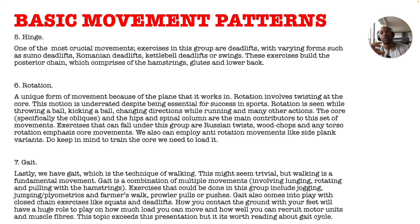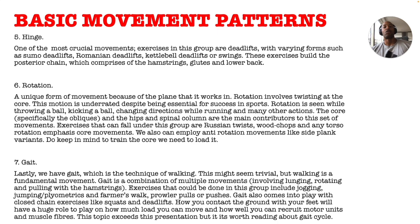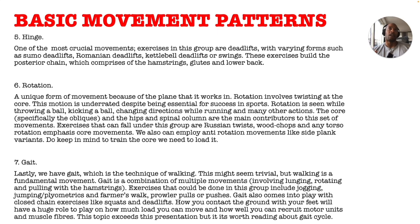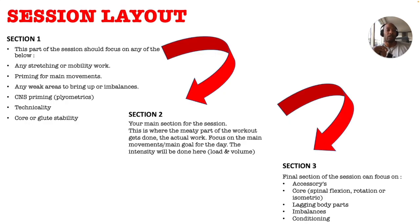Number seven: Gait — the technique of walking. This might seem trivial, but walking is a fundamental movement. Gait is the combination of multiple movements involving lunging, rotating, and pulling with the hamstrings. Exercises in this group include jogging, jumping, plyometrics, farmer's walks, prowler pulls, and prowler pushes. Gait also comes into play with closed-chain exercises like squats and deadlifts — how you contact the ground with your feet plays a huge role in how much load you can move and how well you can recruit motor units and muscle fibers. When assessing clients, the first place I look is their feet, because the feet tells you everything, and everything that happens there usually travels up the chain.